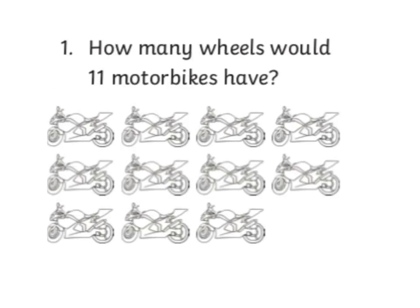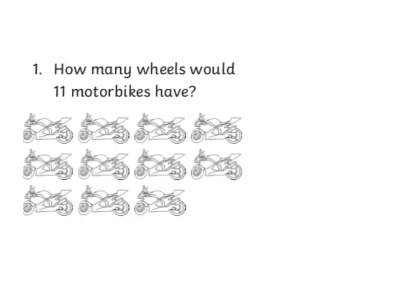Let's have a look at this problem. It says, how many wheels would 11 motorbikes have? To solve this problem, I'm going to use multiplication, because there are 11 motorbikes and each motorbike has 2 wheels. So I'm going to multiply 11 by 2 to find out the answer. This would be a multiplication problem.